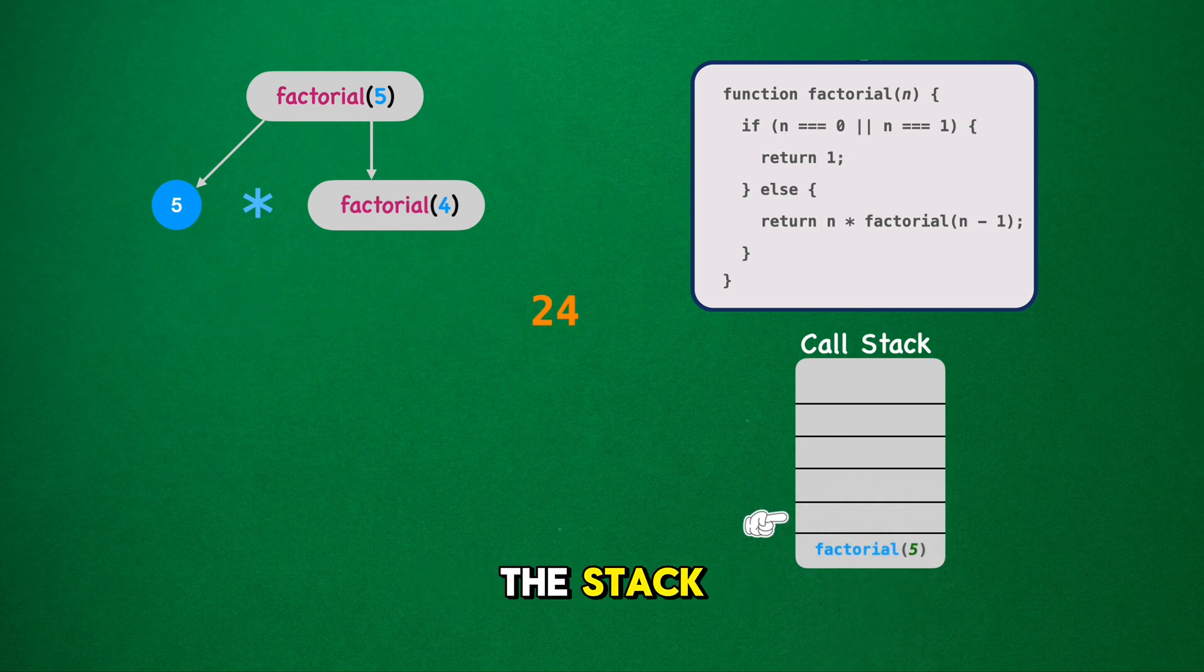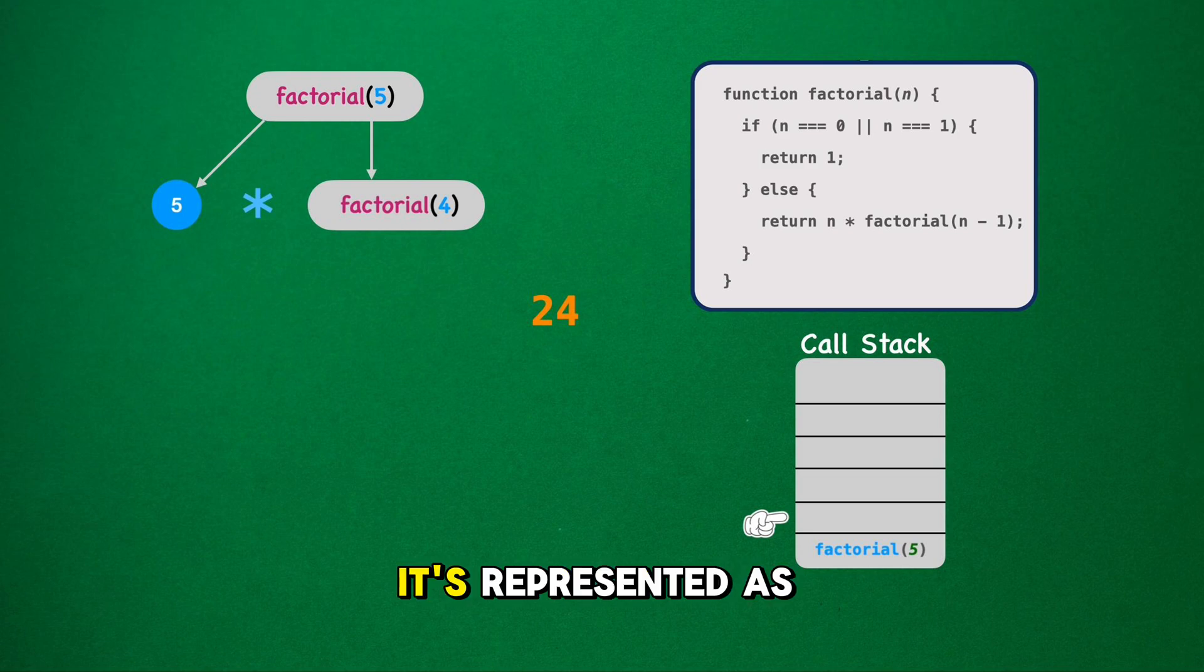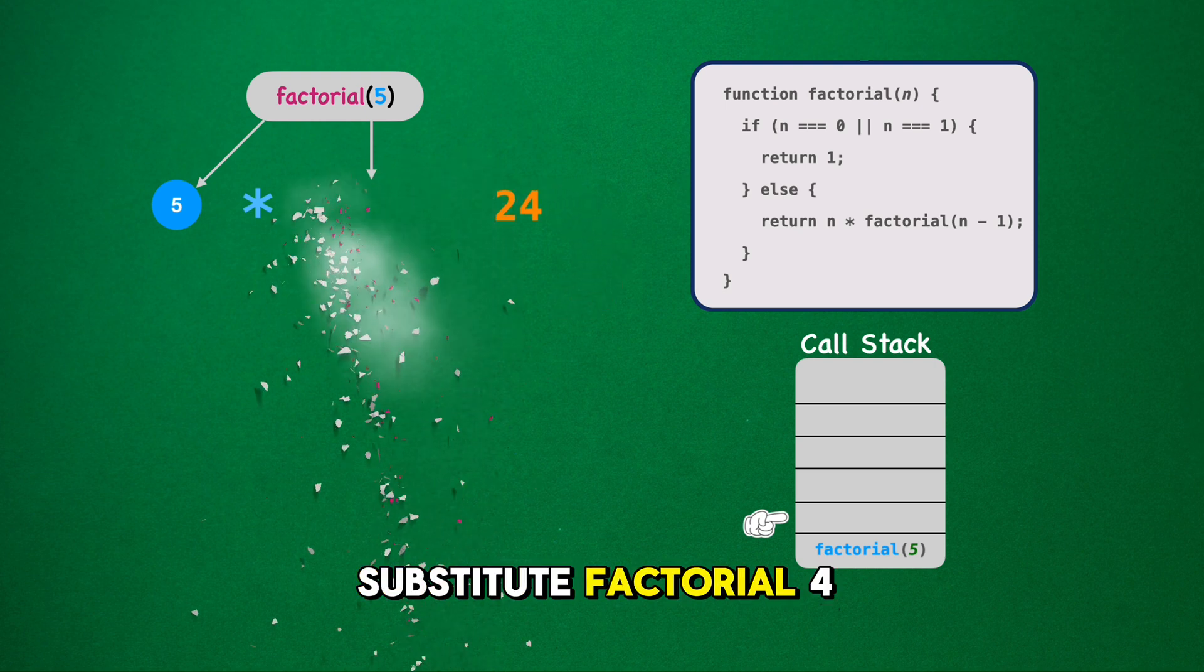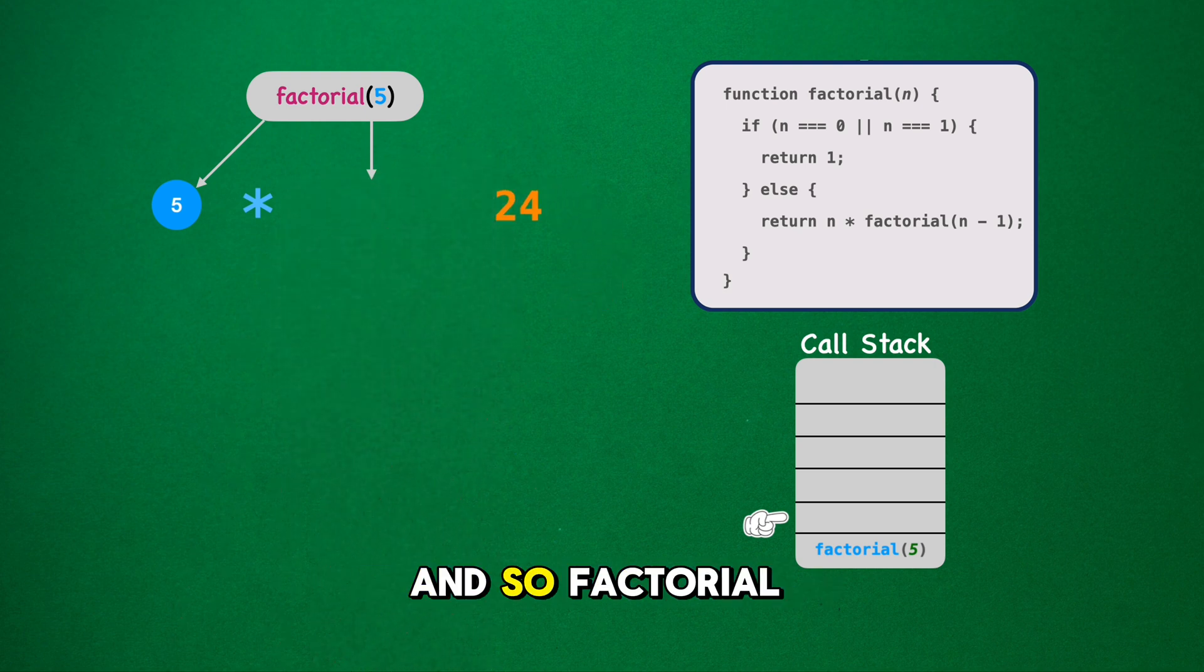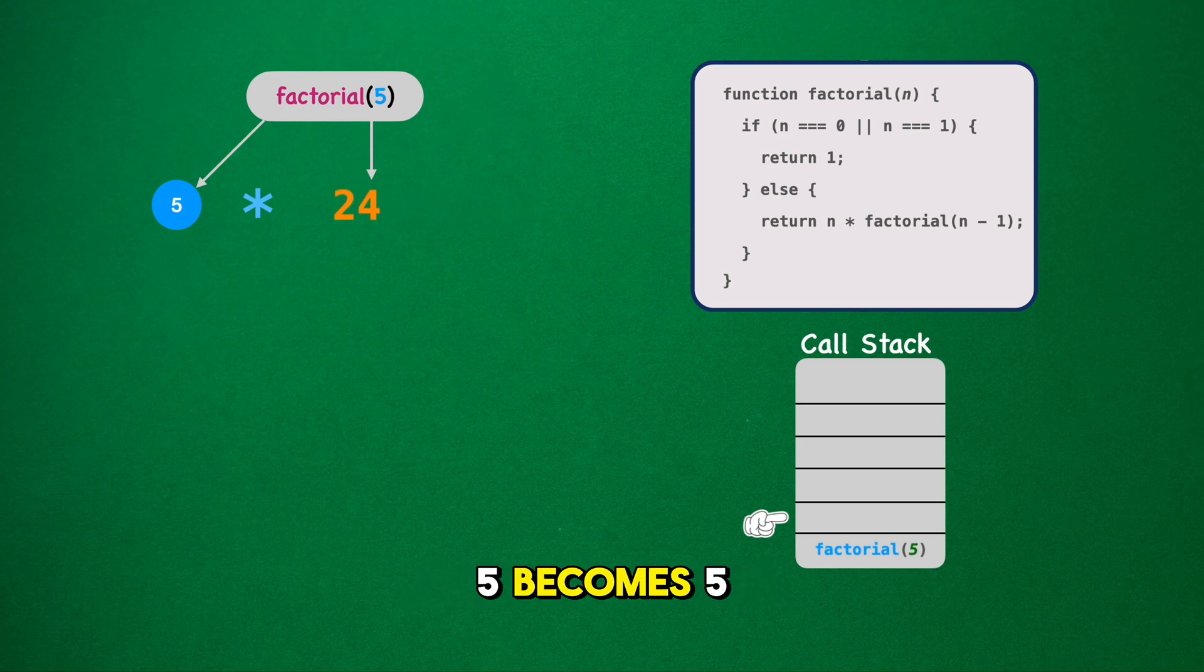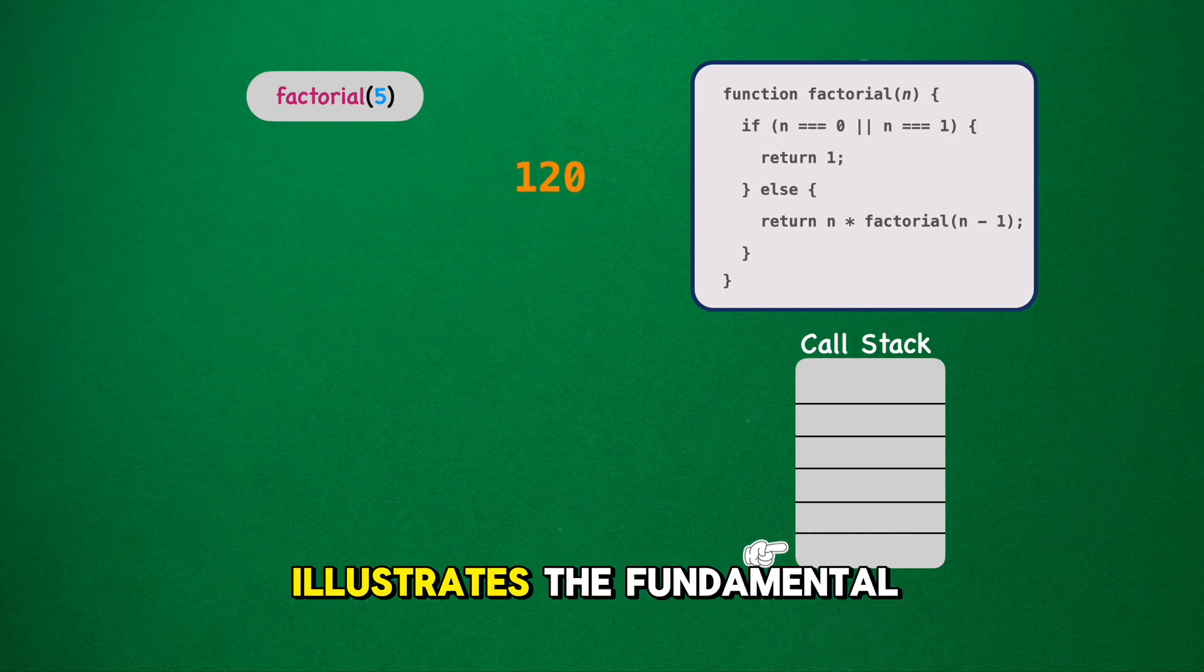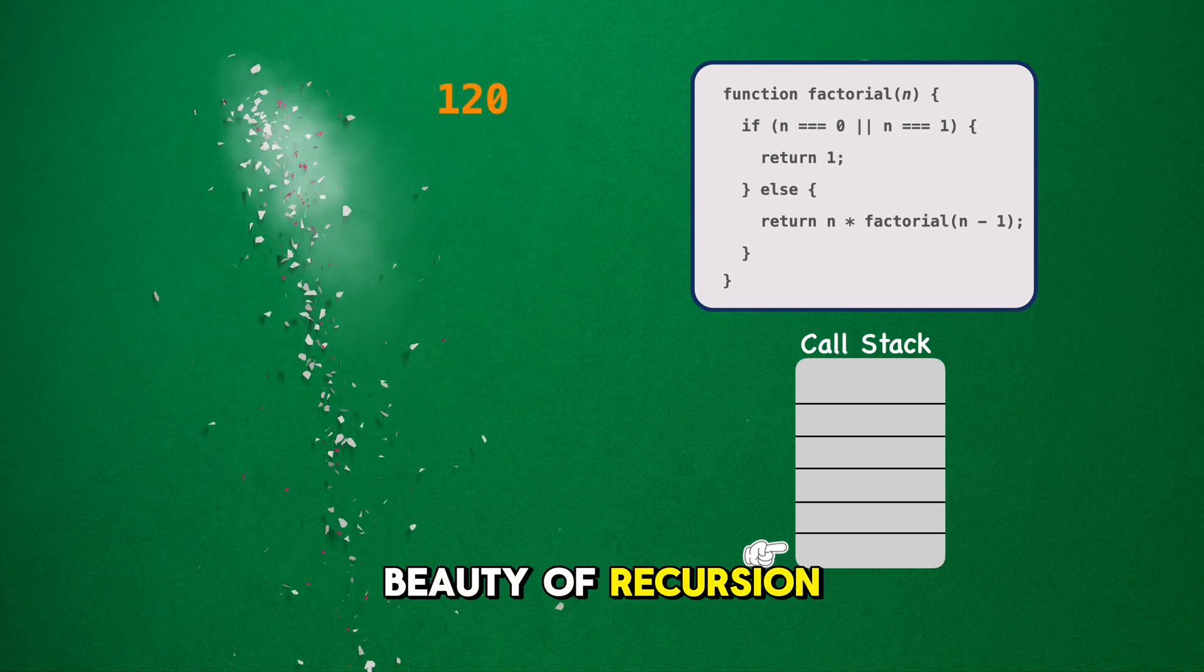Finally, we reach the top of the stack where factorial 5 is awaiting its turn. It's represented as 5 asterisk factorial 4. We can now substitute factorial 4 with 24, and so factorial 5 becomes 5 asterisk 24, equal to 120. This process of resolving each call, one by one, and removing them from the stack illustrates the fundamental beauty of recursion.